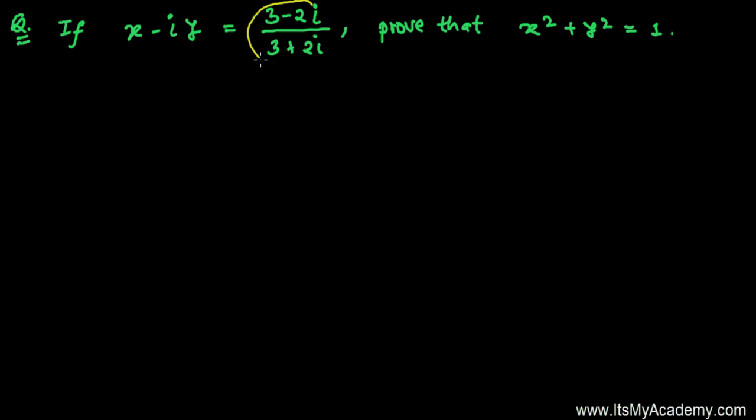First we have to represent this (3-2i)/(3+2i) format into the very simple standard format of a+bi so that we can compare and find out the value of x and y. We need to first find out that and then only we can see whether the sum of the squares of x and y is 1 or not.